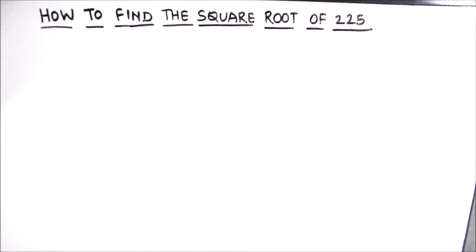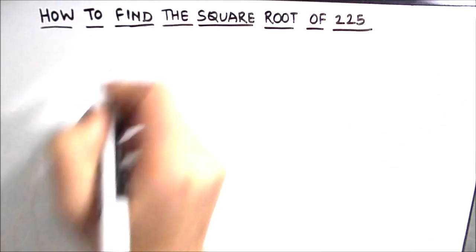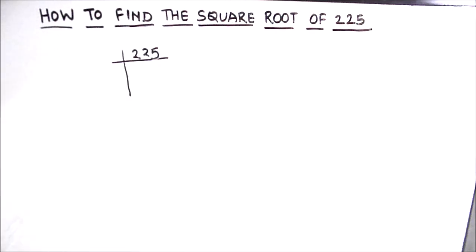Finding square root using the prime factorization method is very easy. In this method we divide the number using prime numbers and find the factors of the number, and by taking the square root of the product of the factors we can find the square root of the number.